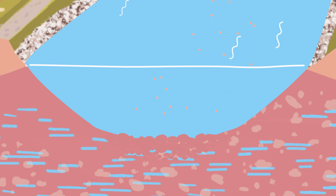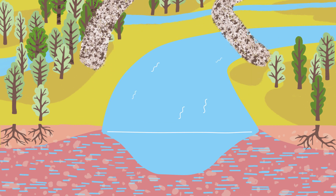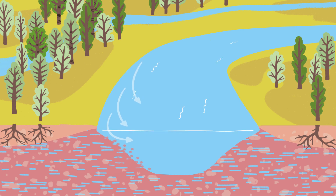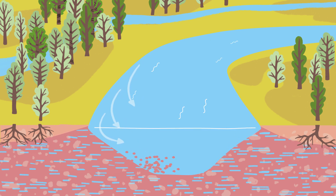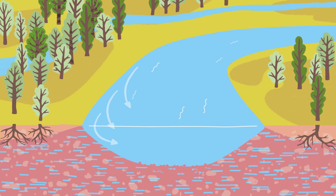Another possibility is to remove the fixed bank protection. The river can now erode the banks and widens. Material from the former protected banks moves into the riverbed, making the riverbed larger. The water spreads out and loses energy, which reduces the erosion.